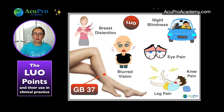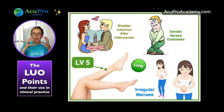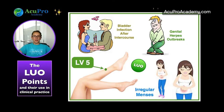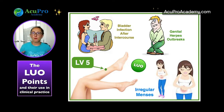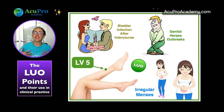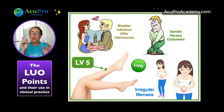For GB37 and LR5 together — liver and gallbladder are great for moving qi and promoting relaxation. Those two points work well specifically when there is tension in the breast area. For women with PMS breast tenderness or fibrocystic breast, especially when stress increases the tenderness or the cysts, this combination works quite well.